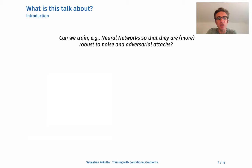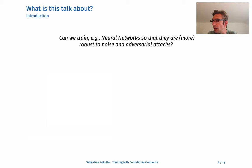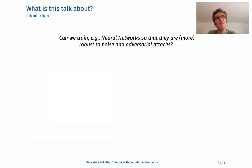This talk is about the question of whether we can train neural networks or other machine learning systems in such a way that they are more robust to noise and adversarial attacks. You train a machine learning system on clean inputs, and for whatever reason your inputs are noisy or corrupted — benign in the case of noise, or more adversarial in the context of adversarial attacks — and we ask how much the performance of your classifier degrades, and whether we can find a way to make that degradation more controlled.